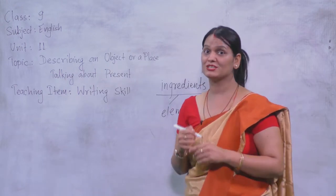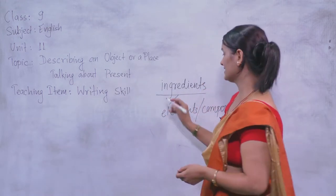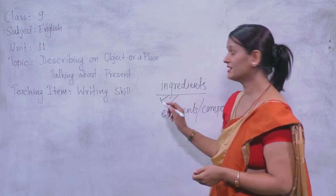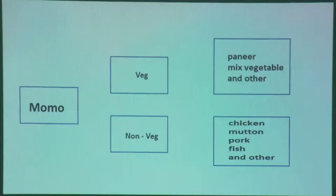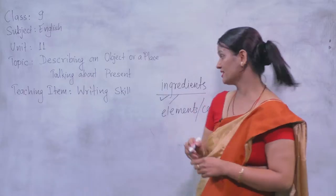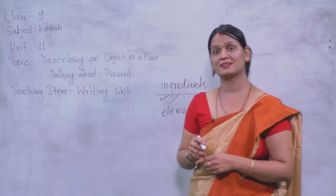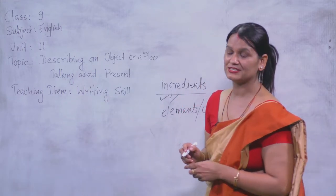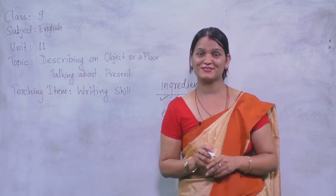So depending upon the quality or the variation, the variety of ingredients also differs. If it is vegetable momo then you can see paneer, mixed vegetables, and other items we can include. And if it is non-vege then chicken, mutton, pork, fish, etc. we can use. Other ingredients like flour, pieces of vegetable, onions — these are the things also needed to prepare momo.